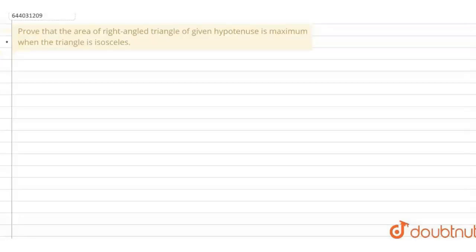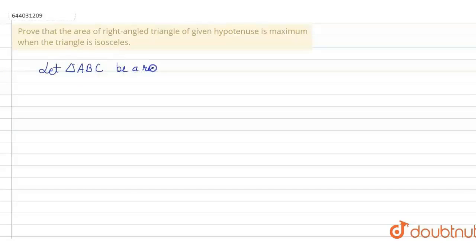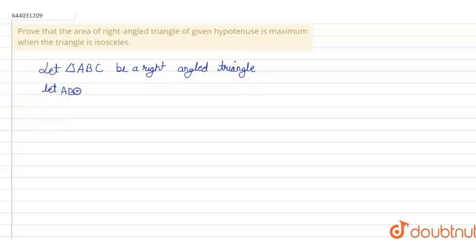Prove that the area of a right angle triangle of a given hypotenuse is maximum when the triangle is isosceles. So let triangle ABC be a right angle triangle. Let AB equal to H (hypotenuse) and AC is equal to X.